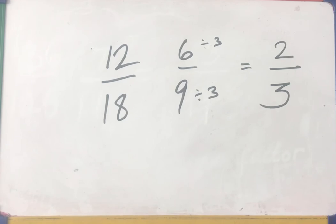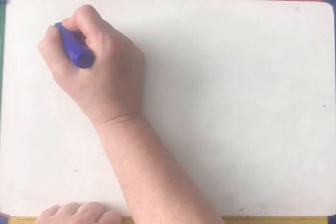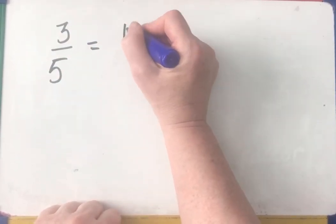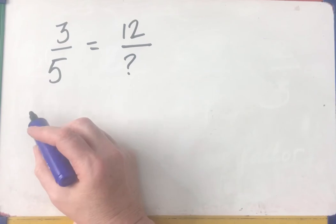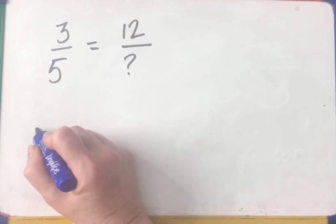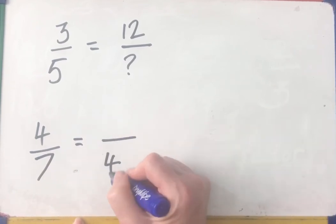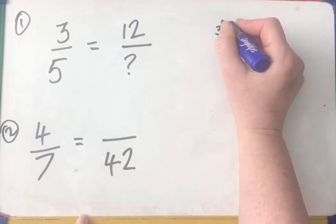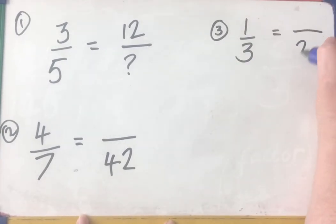Right, time for you to have a go at some. Here's some fractions and I want you to find the equivalent fraction. If we have 3/5 with a numerator of 12, what's the denominator? Another one might be 4/7 when the denominator is 42. That's number one. Number two. And number three. 1/3 if the denominator is 24.